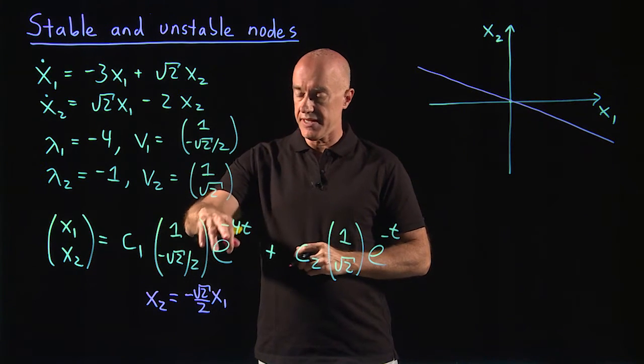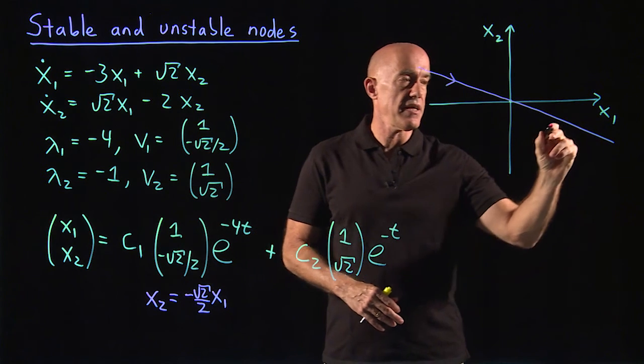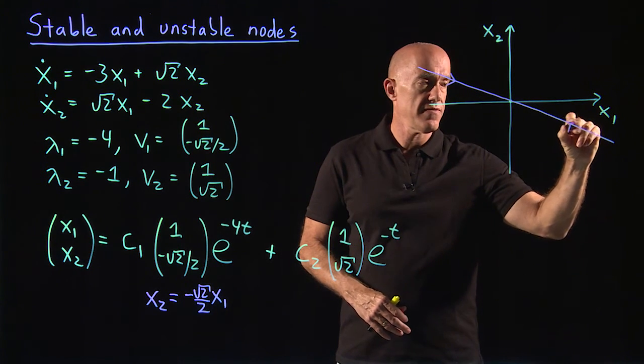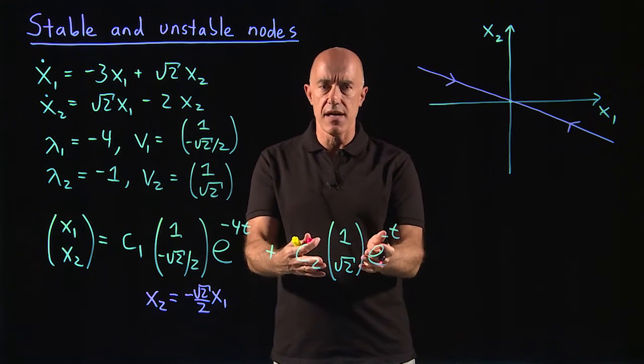So that's the solution where c2 equals 0. And it's decaying, e to the minus 4t. So that means everything here is headed towards the fixed point.